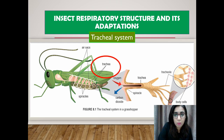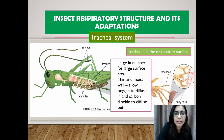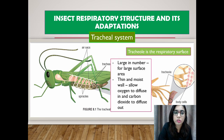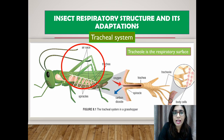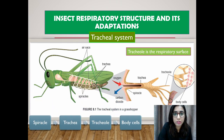The trachea branches out to form final tubes called the tracheoles, which connect to every cell of the body. Tracheoles are said to be the respiratory surface — because they are large in number, providing a large surface area, and they have a thin and moist wall which allows oxygen to diffuse in and carbon dioxide to diffuse out easily. Some insects have air sacs filled with air in their tracheal system to speed up the delivery of respiratory gases during active movement. The pathway of oxygen diffusion from the environment is from the spiracle to the trachea, into the tracheoles, until it reaches the body cells.